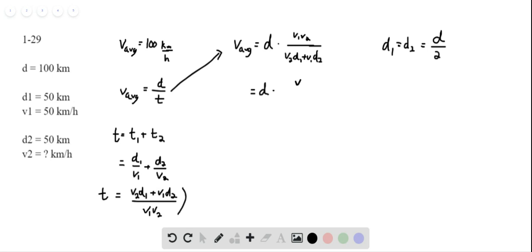So D times V1 V2 over V2 times D over 2 plus V1 times D over 2. The distance terms cancel out, and we can put a 2 in our numerator. So it's 2 V1 V2 over V2 plus V1, and that equals V average.